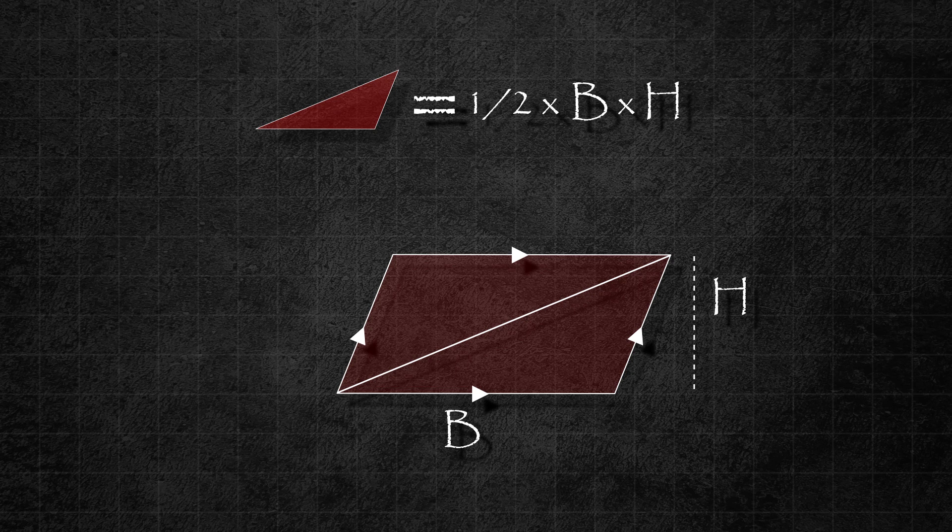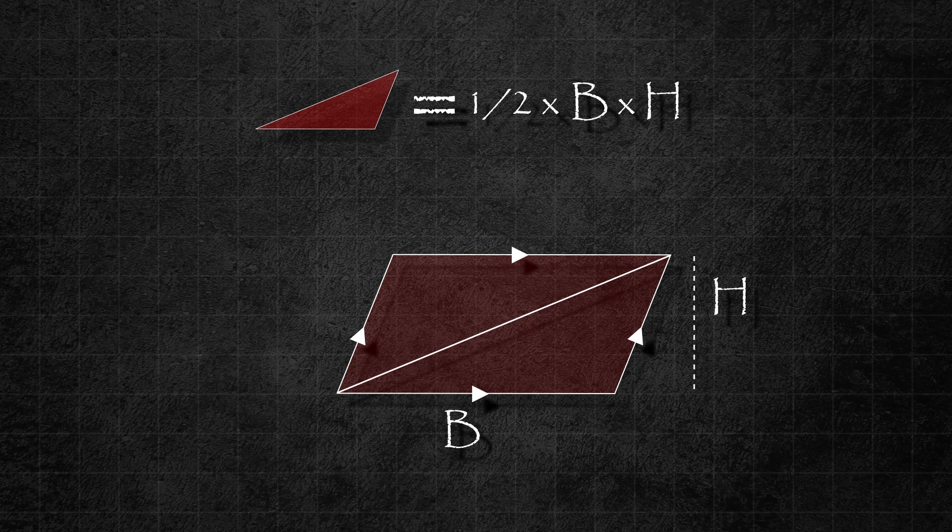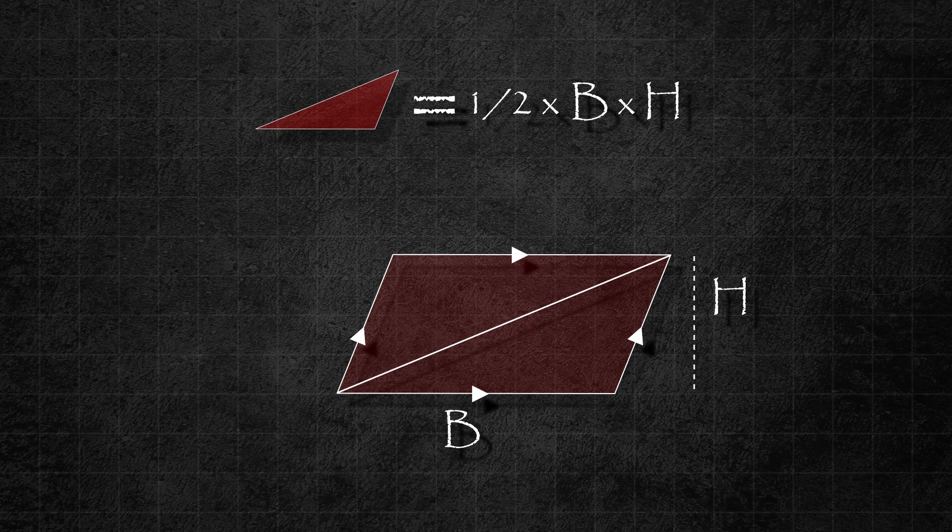Notice that the area formula is the same for all three types of triangles, and that's why it doesn't matter which type of triangle it is. The area formula remains the same: half times b times h or half times base times height.